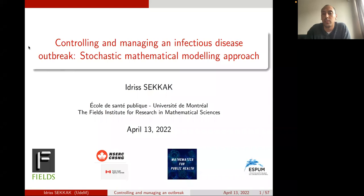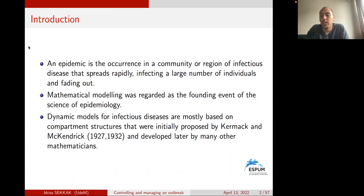An epidemic, by definition, is the occurrence in a community or region of an infectious disease that spreads rapidly or explosively, infecting a large number of individuals and then fading out. Historically, before and in the early 19th century, there was a theory called miasma that concluded that infectious diseases such as cholera were caused by particles in the air called miasmata, which arose from decomposing matter or dirty organics.